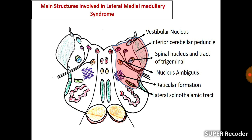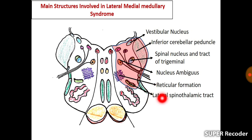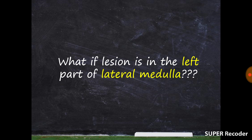When there is a lateral medullary syndrome, the structures involved include: the cerebellar peduncle, the vestibular nucleus (a component of the eighth cranial nerve), the trigeminal nerve spinal nucleus, the nucleus ambiguus — which is important as it supplies cranial nerves 9 and 10 — and the lateral spinothalamic tract. Make note of all these structures.